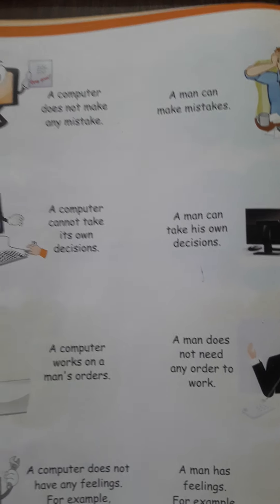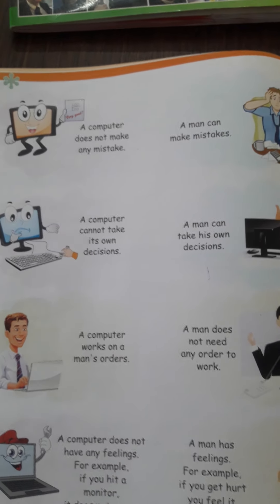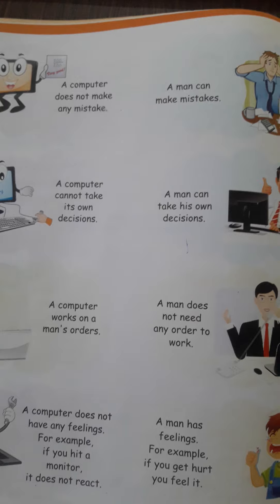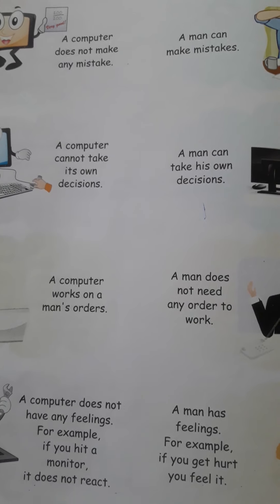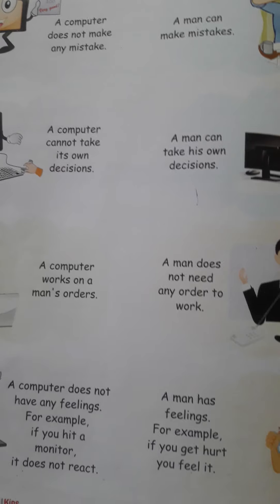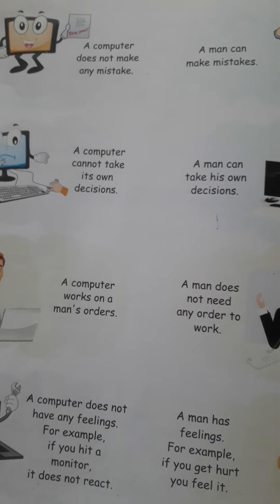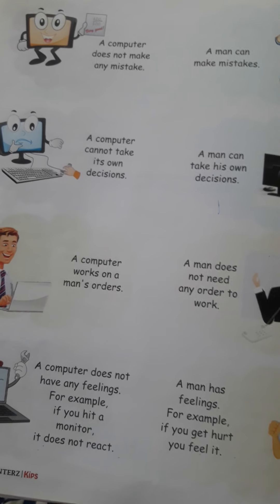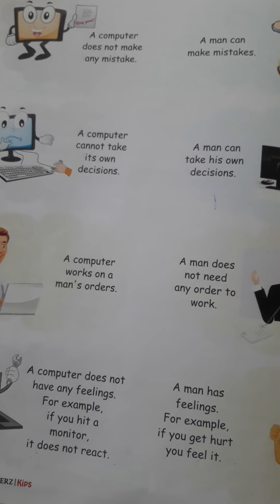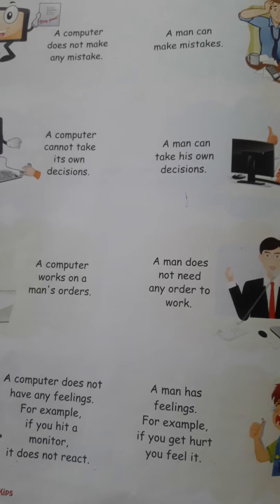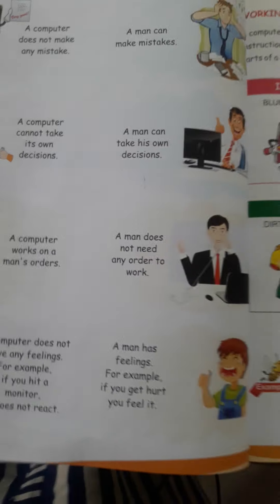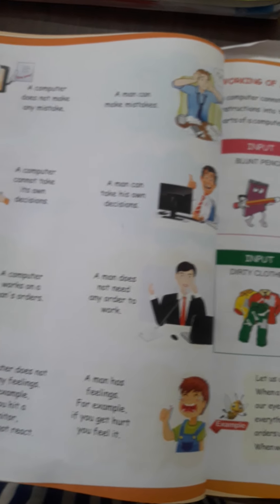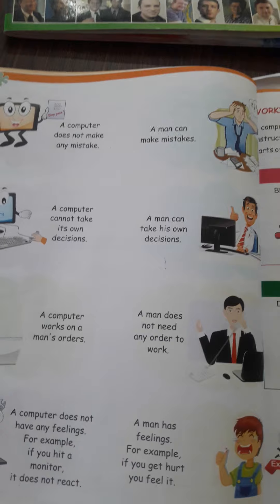A computer does not make any mistake, whereas a man can make mistakes. Computer cannot take its own decisions, but a man can take his own decisions. Computer works on man's orders — it does not work without being given an order.